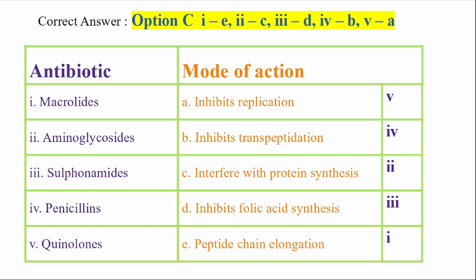The detailed matching: Macrolides matched to E - Peptide elongation block. Aminoglycosides matched to 2C - Interfere with protein synthesis. Sulphonamides matched to 3D - Inhibits folic acid synthesis. Penicillins matched to 4B - Inhibits transpeptidation. Quinolones matched to 5A - Inhibits replication.